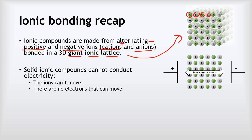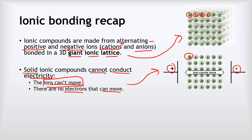In terms of their properties, the most important property in this video is that ionic compounds, when they're solid, cannot conduct electricity. The reason why is simply that the ions can't move. It's also worth saying there are no electrons that can move either, but the ions not being able to move is the key bit. If we look at a two-dimensional slice of an ionic compound, we've got alternating positive and negative ions, and if we put them between two electrodes with a positive and negative electrical supply, this negative ion is attracted towards the positive but it can't move because it's locked in place by that giant ionic lattice.